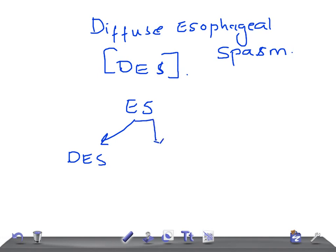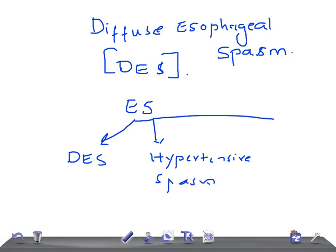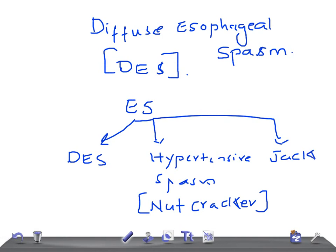Second, it could be a hypertensive spasm, also known as Nutcracker Esophagus. And third, we have another one that's known as Jackhammer Esophagus. So esophageal spasm has three types: Diffuse Esophageal Spasm, Hypertensive Spasm (also known as Nutcracker Spasm), and Jackhammer Esophagus.